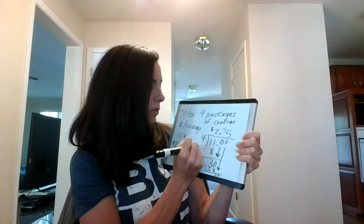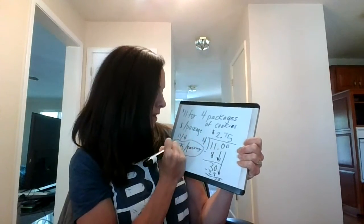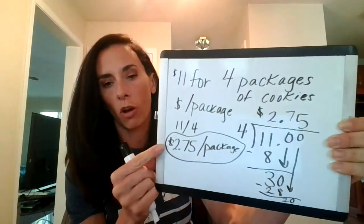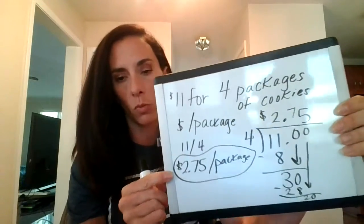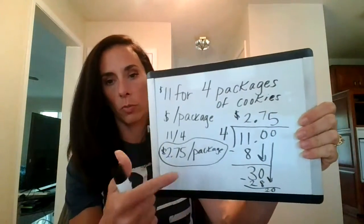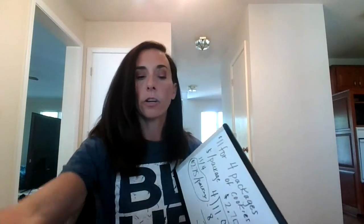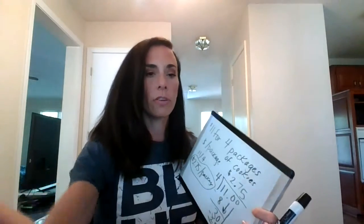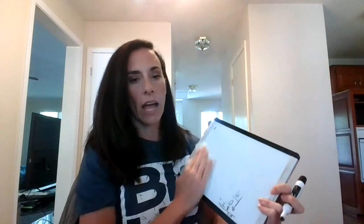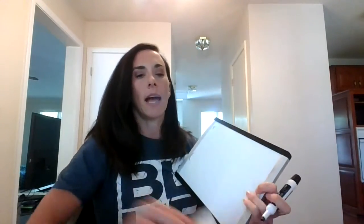This is the correct way to label it, but today on your Google Form, if you just put $2.75 it will count it correctly. You could also put 'per package' just so you know. Let's do another example: we've got 585 miles in 9 hours.